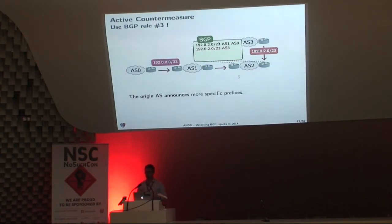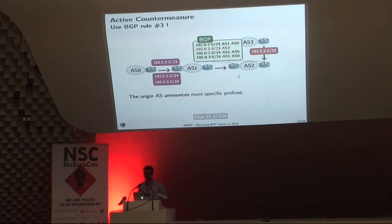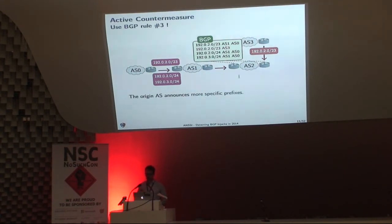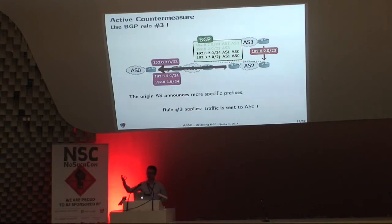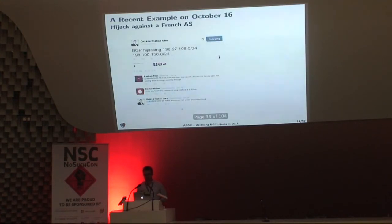What can an operator do to fight BGP hijacks? The first thing they can do is announce what we call more specific prefixes. Here, AS0 announces two /24 prefixes to get back its traffic — these two /24 prefixes are both included in the /23 prefix. The routing table of AS2 has four entries, and because of rule number 3 the router selects the more specific prefixes, so AS0 gets back its traffic. This is a simple but widely used behavior by operators.